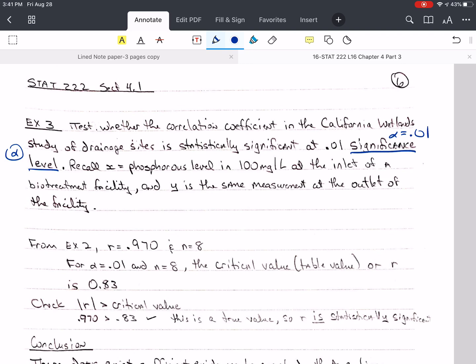So recall that X was the phosphorus level in 100 milligrams per liter at the inlet of a biotreatment facility that was going to clean the water. And Y is the same measurement, but at the outlet, after they've cleaned the water and dumped it back out into the environment.